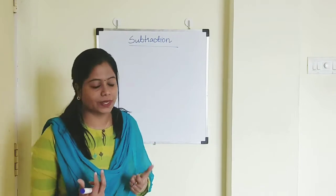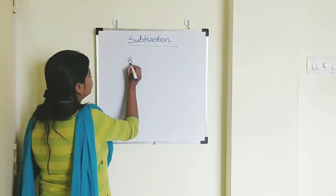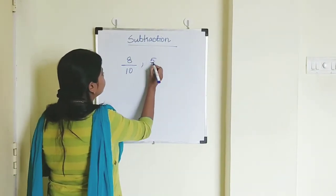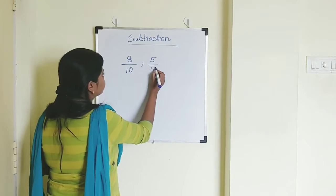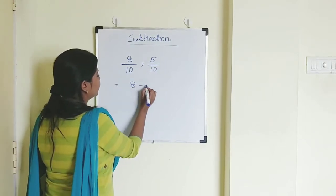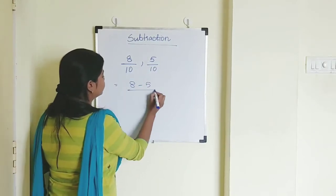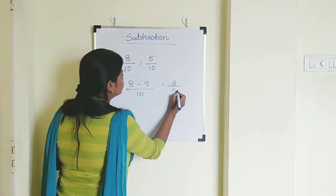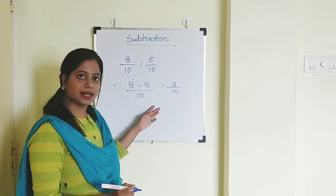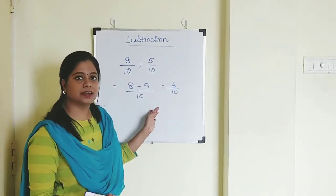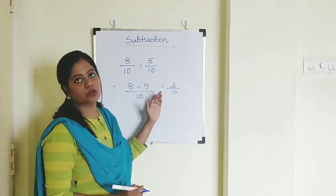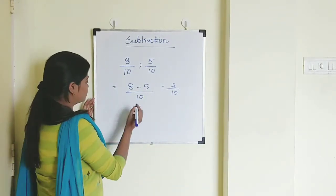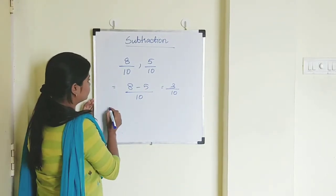So let's say if it's 8 by 10 minus 5 by 10, that is 3 by 10. As you can see, it is as easy as addition. The same thing you're going to do in subtraction as well.